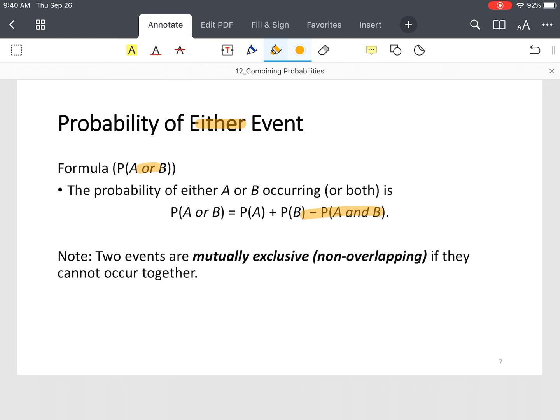So here's your formula. You still have the probability of event A. Instead of multiplying it by the probability of event B, we add the probability of event B. And then we subtract the overlap, which simply means both events occur at the same time.